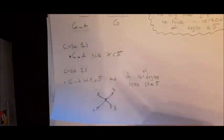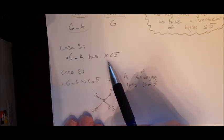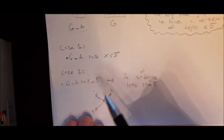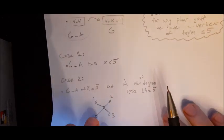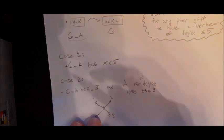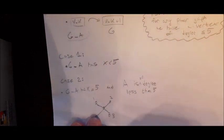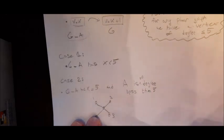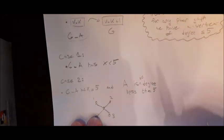We need to take four cases. Case one: G minus A has a chromatic number less than five, meaning you can color G minus A using four or fewer colors. When you put A back, simply color it with the color you haven't used yet. You have five colors available and used fewer than five, so this case is straightforward.